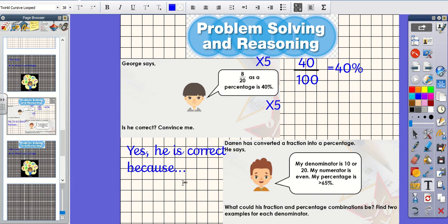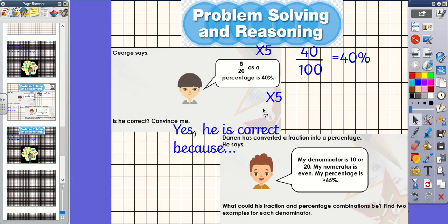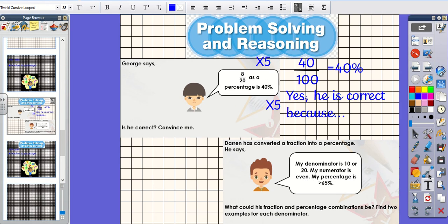Now, let's have a look at this question here. Darren has converted a fraction into a percentage. He says, my denominator is 10 or 20. My numerator is even. My percentage is greater than 65%. What could his fraction and percentage combinations be? Find two examples for each denominator. Okay then. So, let's have a look at a denominator of 20. I know that to get from 20 to 100, I need to multiply by 5. So, I need a number that will multiply by 5 that would give me a number greater than 65. My numerator is even.